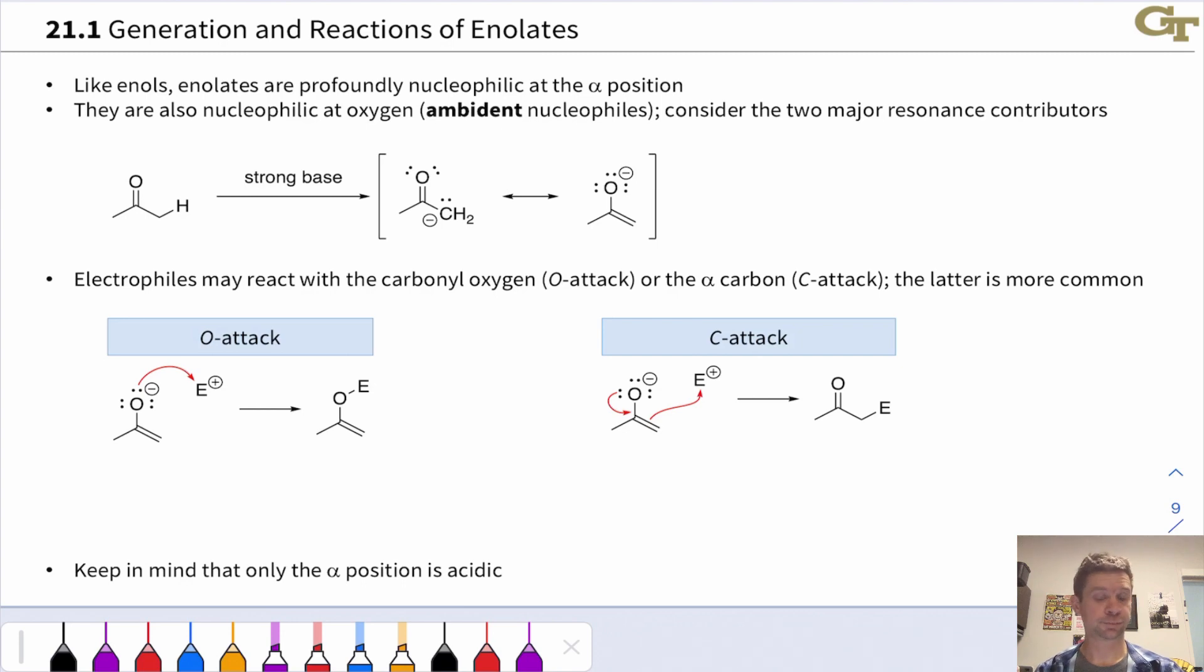Like enols, enolates are profoundly nucleophilic at the alpha position, and the second best resonance form of the enolate shows us this. They're also nucleophilic at oxygen though, and so they're often referred to as ambident nucleophiles, nucleophiles with two reactive sites: carbon and oxygen.